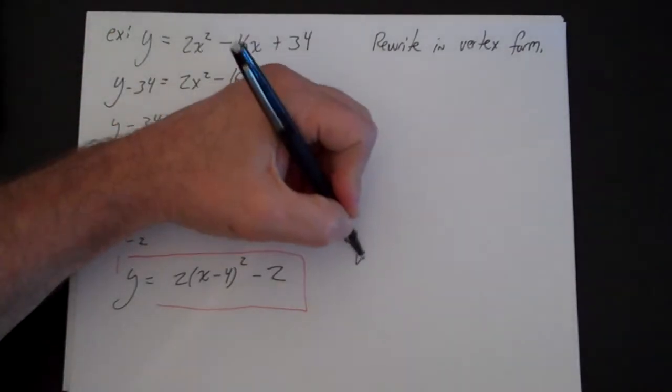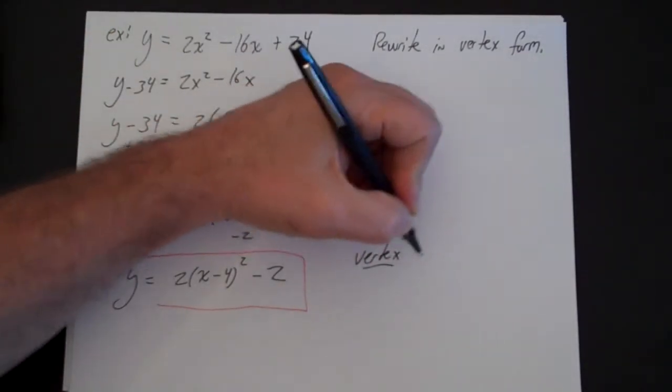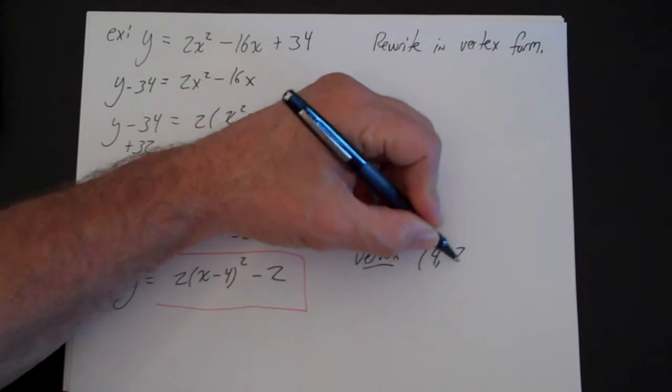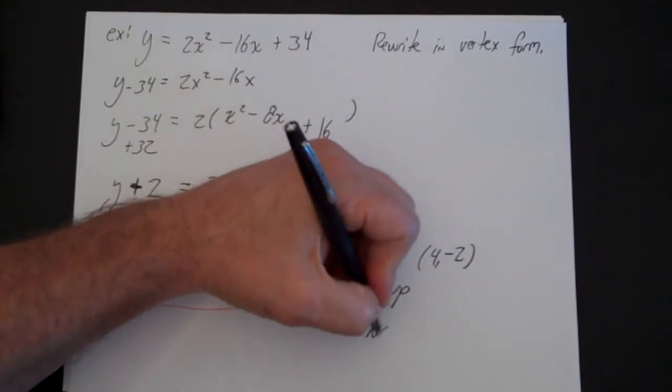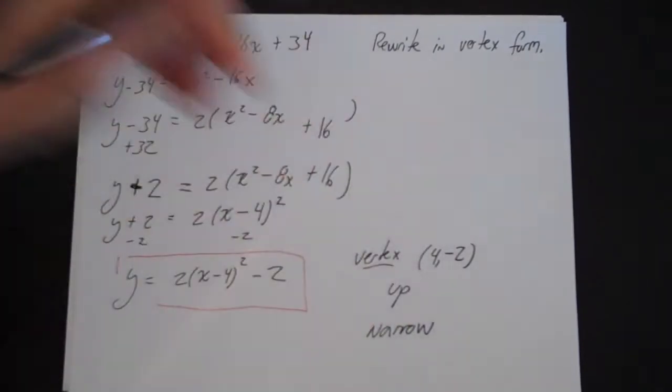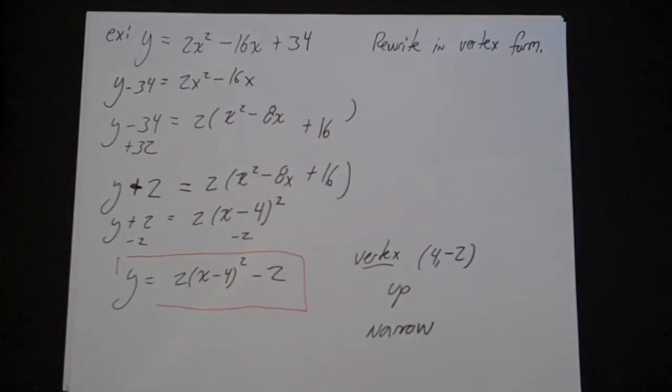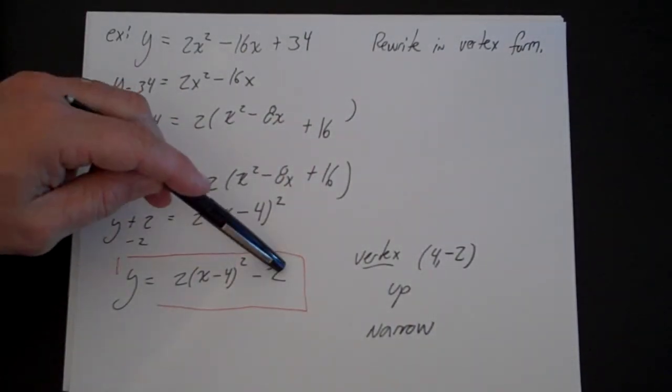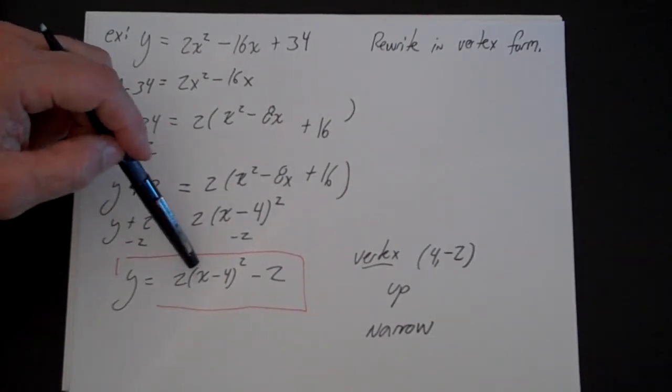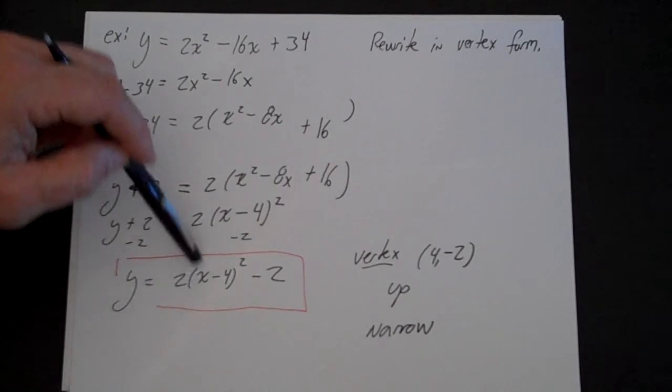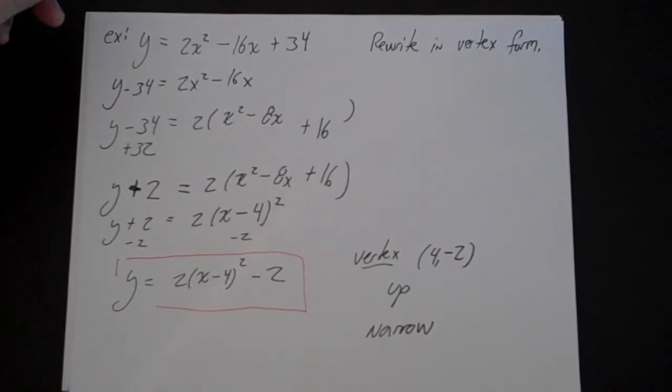This is a parabola with vertex 4 comma negative 2. It opens up and it's relatively narrow. The h and the k gives us the vertex. The fact that this number is positive means it opens up. The fact that the absolute value of this number here is greater than 1 means it's going to be narrow.